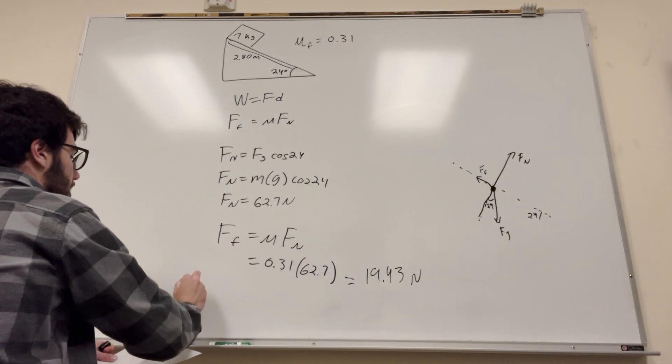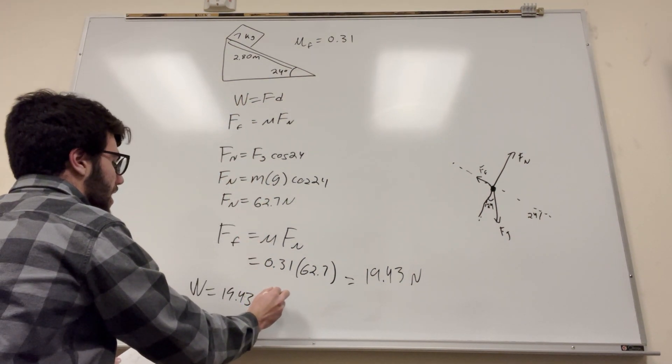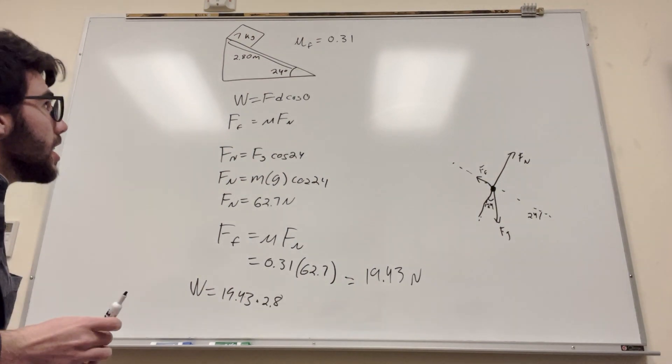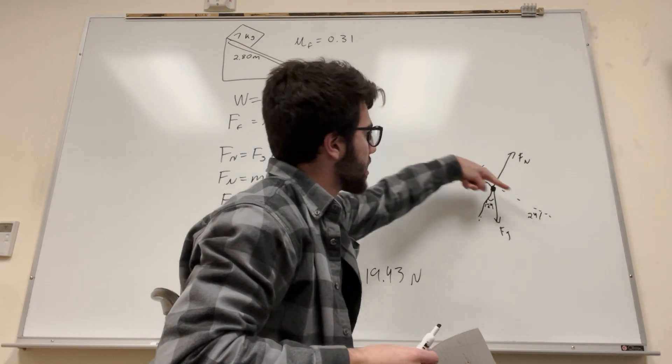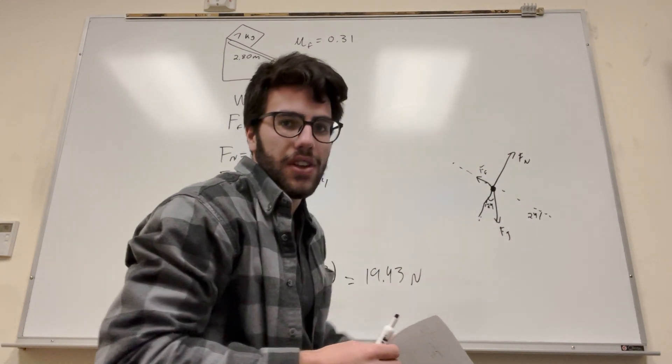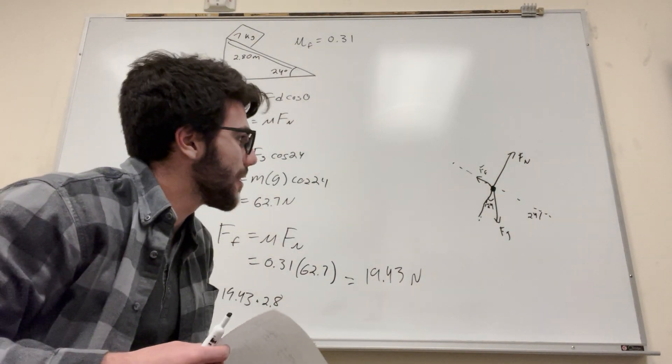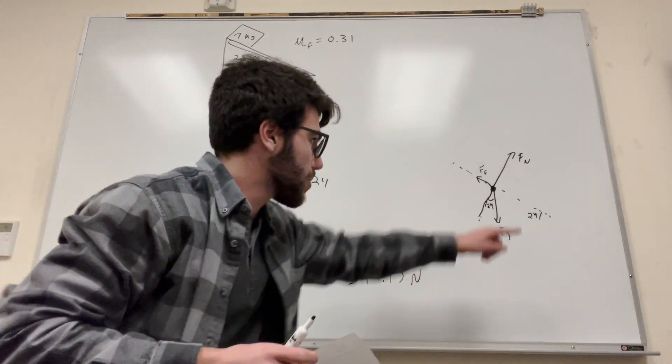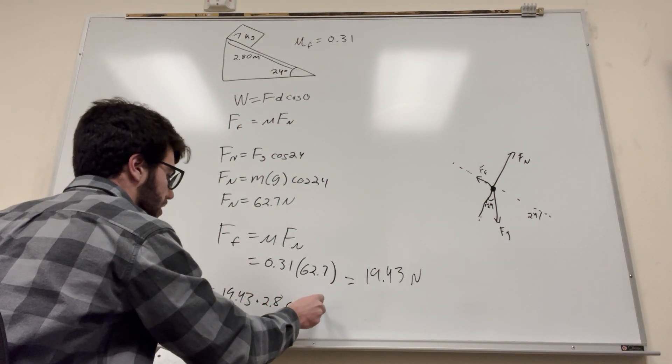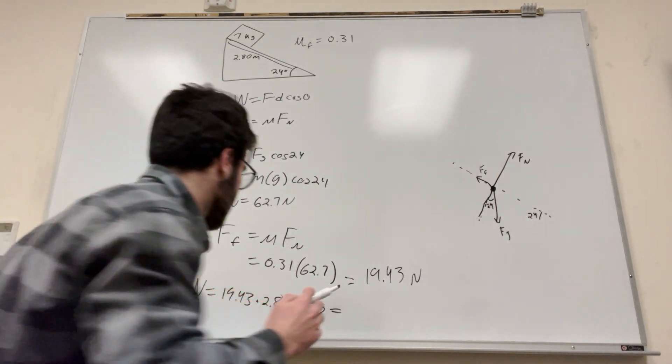Okay, so this is the force. So then we can plug it back into this. So work is equal to force times distance, so 19.43 times distance, which is 2.8. I'm actually missing something in that equation, it's cosine of theta. But it's not the theta that you think it is in this one. This one, we're looking at force in the x direction. So if you think about this is 0 and this is 180, you see that force of friction is a whole 180 degrees away.